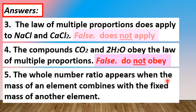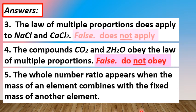For statement number 5: The whole number ratio appears when the mass of an element combines with the fixed mass of another element. This statement is indeed true.